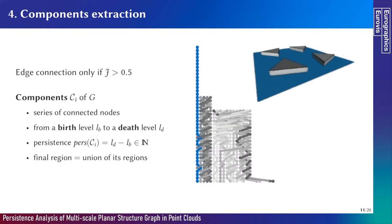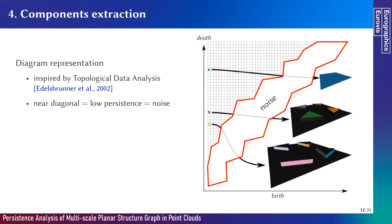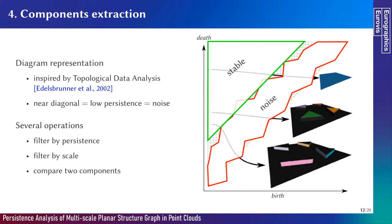Birth and death levels can be represented as a point in a persistence diagram, which comes from topological data analysis. The x-coordinate is the birth scale and the y-coordinate is the death scale of a component. A point on the diagonal is a region that appears at one level of scale and directly disappears at the next — like a noisy area. On the contrary, points far from the diagonal, on the top left corner of the diagram, are components highly stable with a large difference between birth and death levels, meaning the associated region is present on the detailed point cloud as well as on the smooth one. This is a good way to robustly find planes on point clouds. We can also look at regions only in a certain range of scale to focus on details or global shapes, and easily compare components by their distance in the diagram.